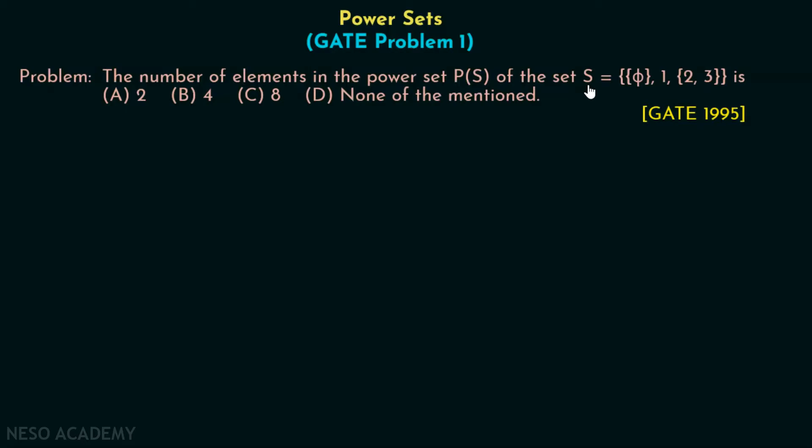This is set S. We have to identify the power set of this set. Here in this set, we have total 3 elements if you see this carefully. The first element is a set with another set which is an empty set. Second element is 1, and the third element is a set with 2 elements: 2 and 3.